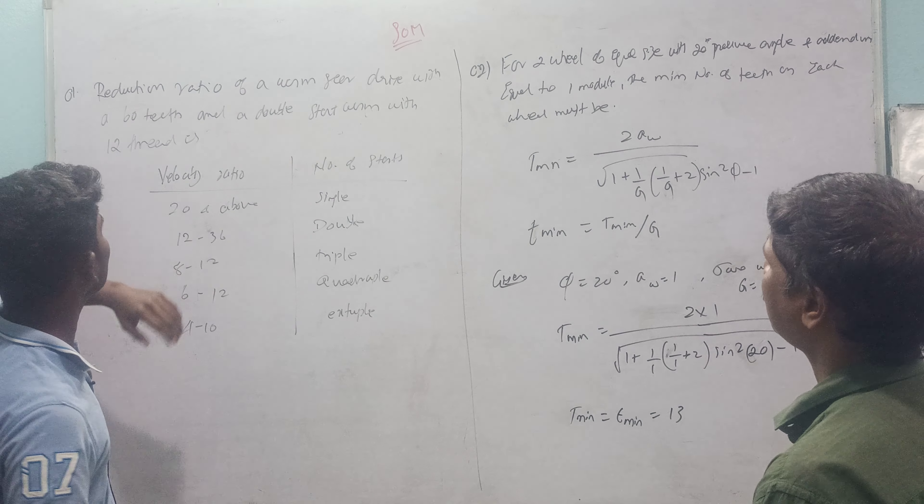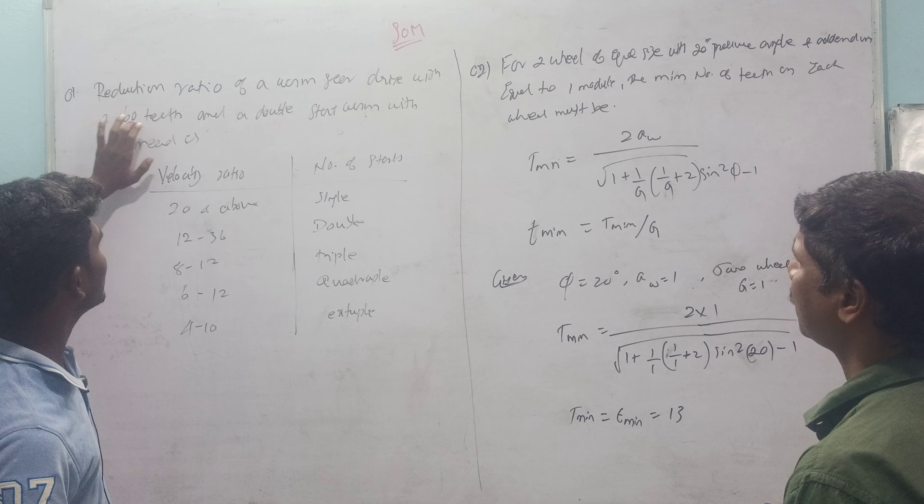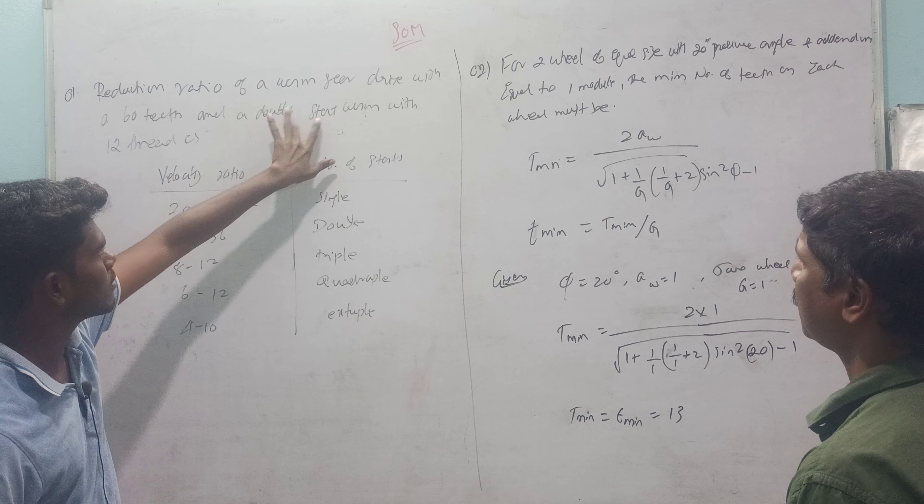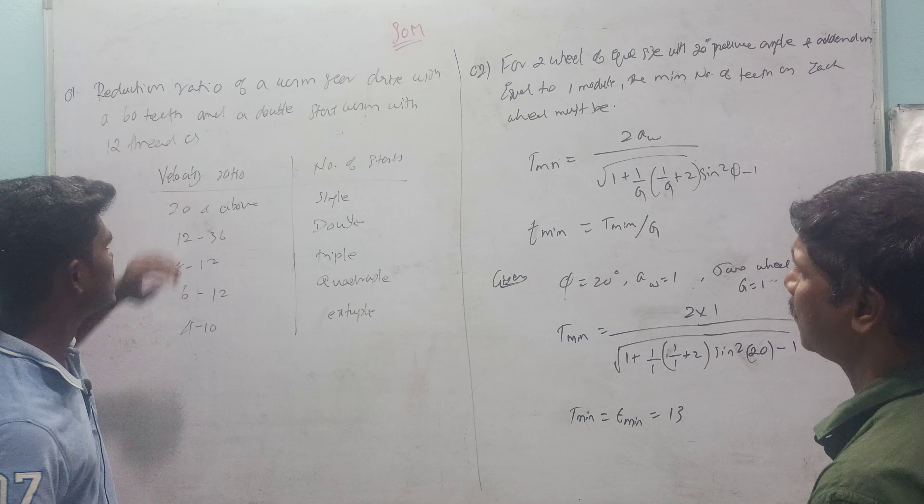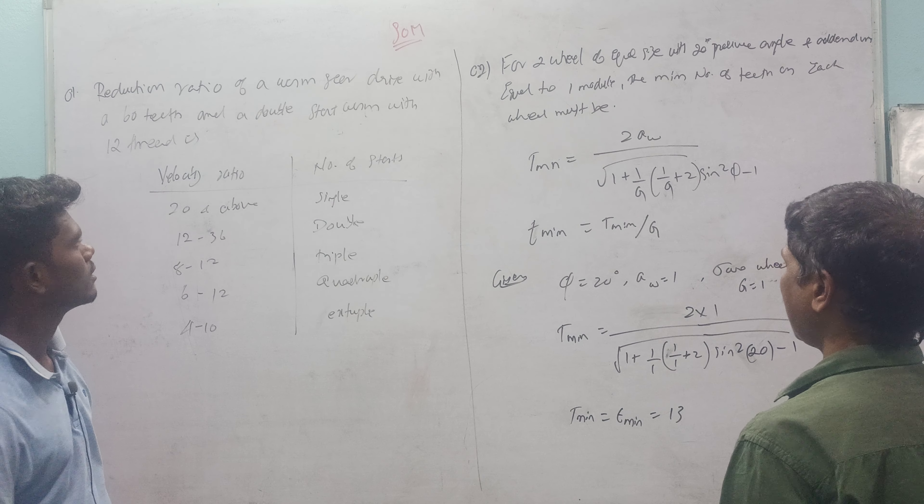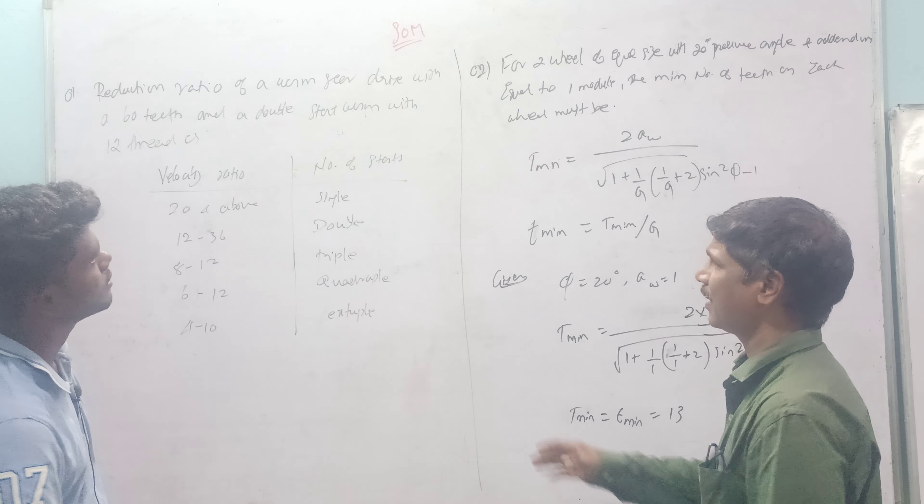Reduction ratio of a worm gear drive with 60 teeth and a double set worm with 12 threads. This is the design subject of two things.